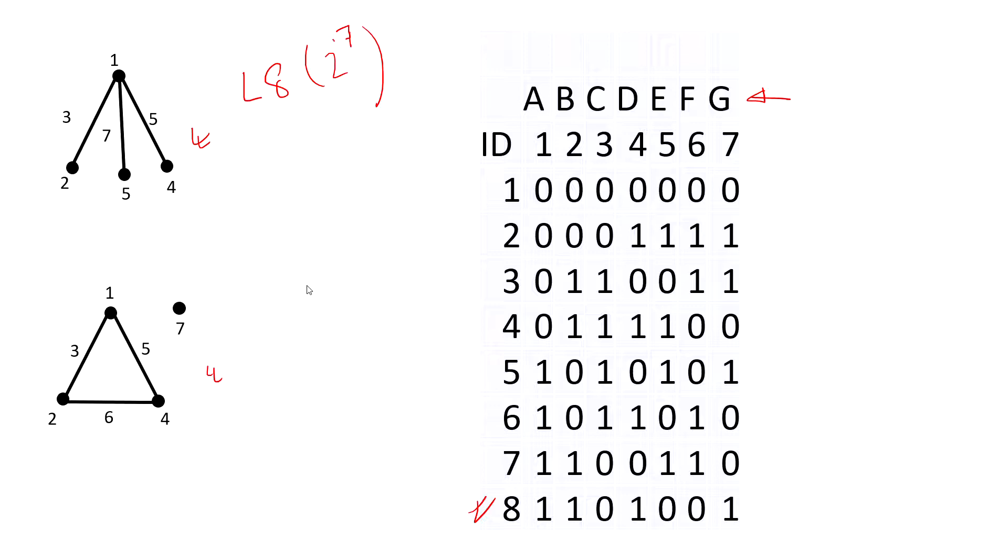So Taguchi said, why not consider that at the beginning of the experiment, unlike traditional design of experiments? Let's see these two designs here. Taguchi doesn't use A, B, C, D, E as factors; it uses columns one, two, three instead. Let's say we assign factor A in column one, factor B in column two, and factor C in column four.